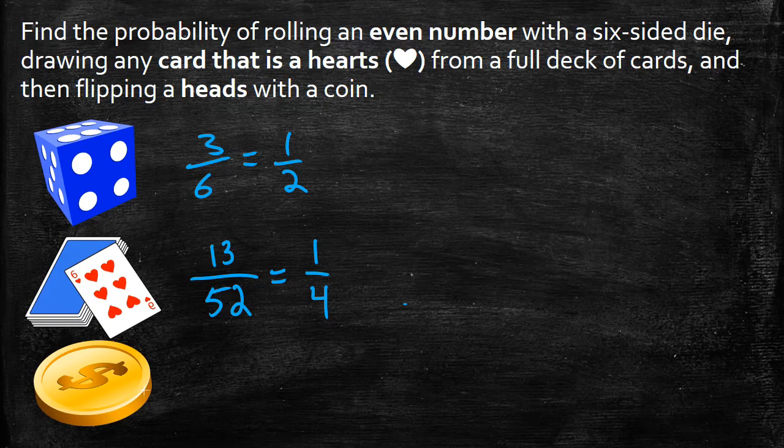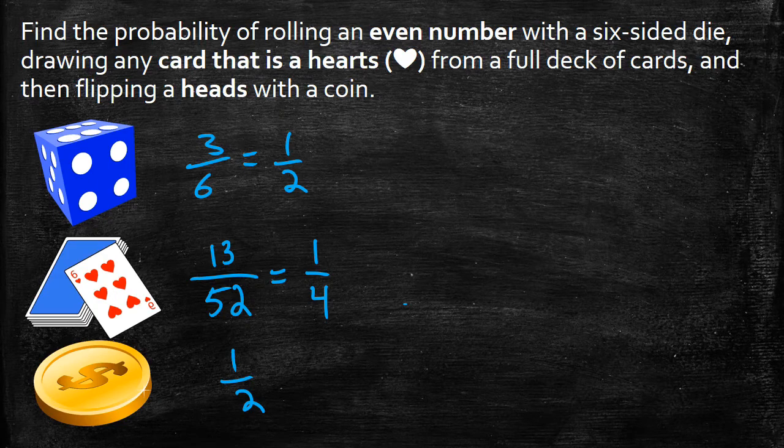And I know from before that flipping a heads with a coin, there's only two options. One of them is a head. It gives us 1 over 2.